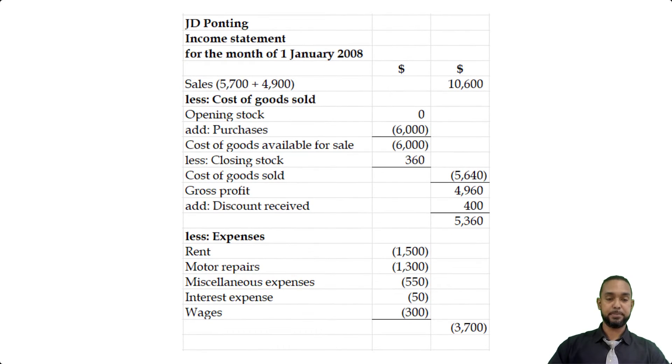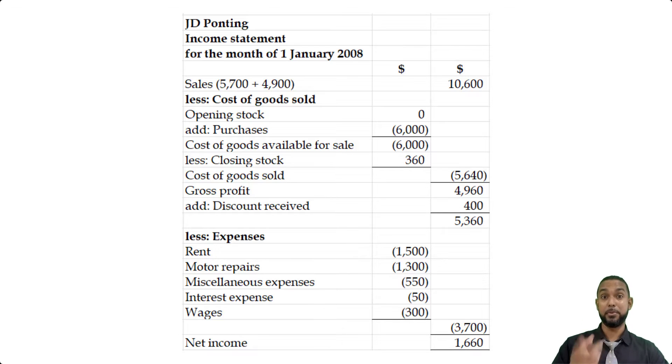Totaling expenses gives us $3,700, which when subtracted from the $5,360 above gives a net income of $1,660. And there you go — you've prepared an income statement practically using a cashbook and the information used to prepare it. That's the solution for question 1 from the May 2009 POA paper 2. If you have any questions, please leave them in the comment section and I'll get back to you. Don't forget to subscribe and check out my website for useful POA handouts. Thank you so much for watching — take care and I'll see you next time.